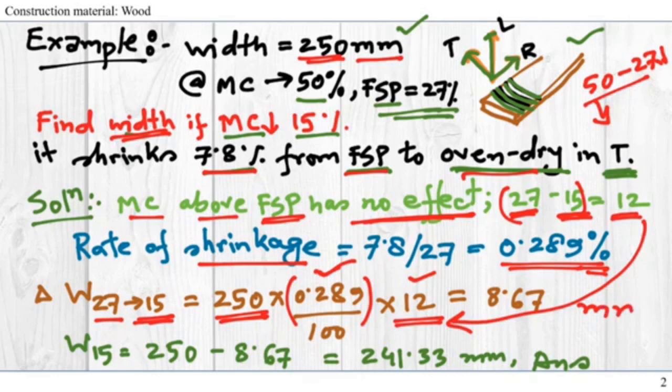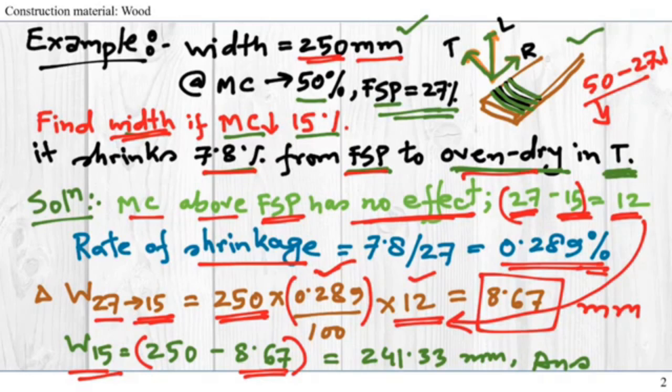So what would be the width at 15% moisture content? You have to take the original 250 millimeters minus the difference, which gives us 241.33 millimeters. So this is our answer. This will be the width when the moisture content dropped to 15%.